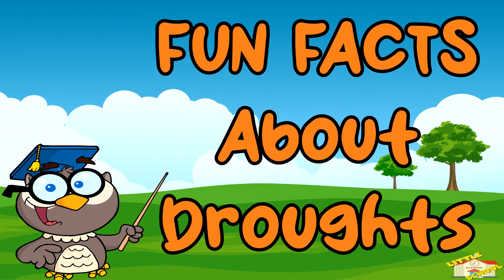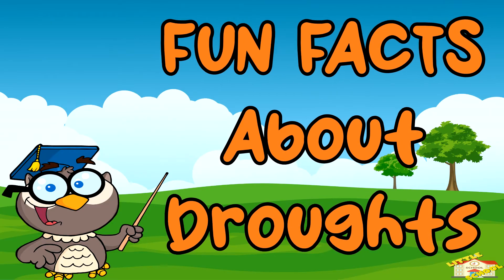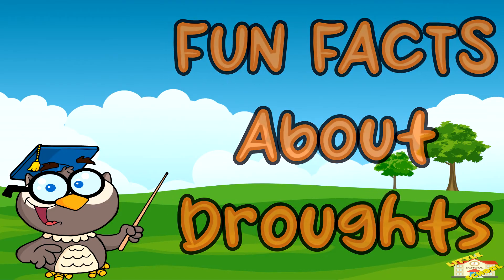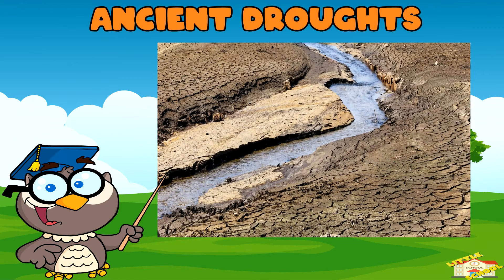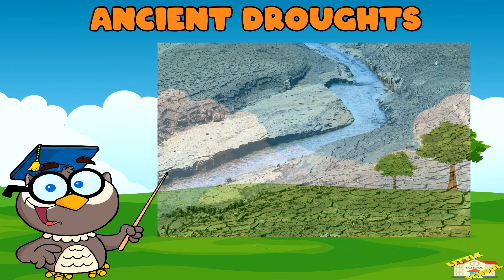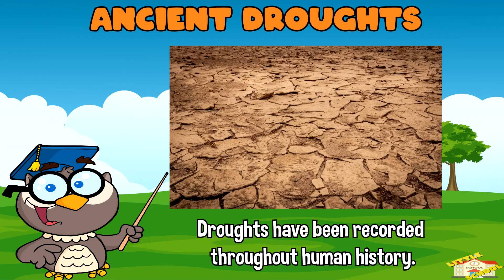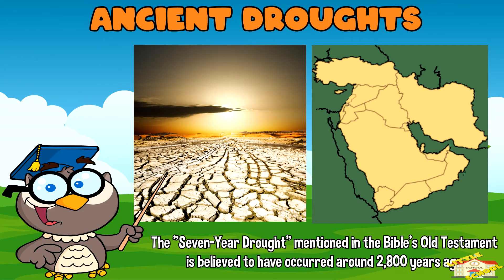Now here are fun facts about droughts. Ancient droughts. Droughts have been recorded throughout human history. For example, the seven-year drought mentioned in the Bible's Old Testament is believed to have occurred around 2,800 years ago in the ancient Middle East.